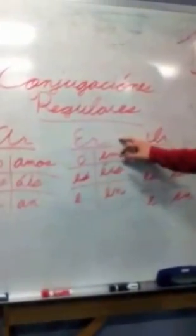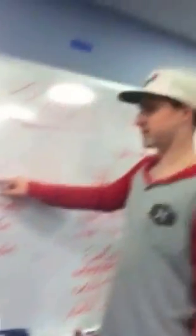Las conjugaciones de E-R son O, E-S, E, Emos, Eis con acento en la E, E-N. Las conjugaciones de I-R son O, E-S, E, Imos, I-S con acento en la I, E-N.